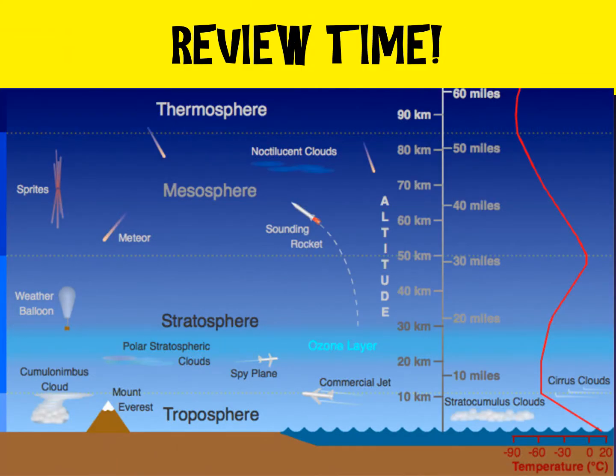Before we get started, I wanted to spend a little time reviewing the four layers of the atmosphere that we learned in our previous unit. There are four different layers: most of our outdoor air pollutants will be found in the troposphere layer. It goes troposphere, stratosphere, mesosphere, and thermosphere. In between each of the layers, you have what are called pauses, and as you go up through these layers, the temperatures fluctuate.